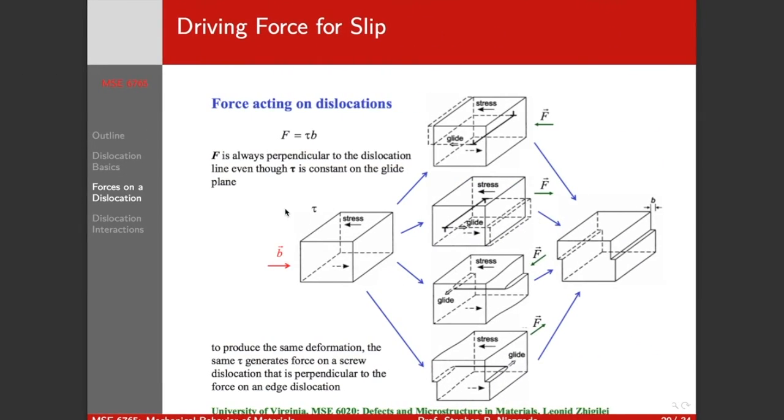So I meant to include this in the last video. Sorry for the jump cut. If we go back to the driving force for slip, F equals tau B, tau of course is the resolved shear stress. The force is always perpendicular to the dislocation line, but our resolved shear stress is going to be constant on the whole slip plane. So that means to produce the same deformation, the same resolved shear stress generates the force on a screw dislocation that's going to be perpendicular to the force on an edge dislocation. All four of these configurations produce the same final offset.